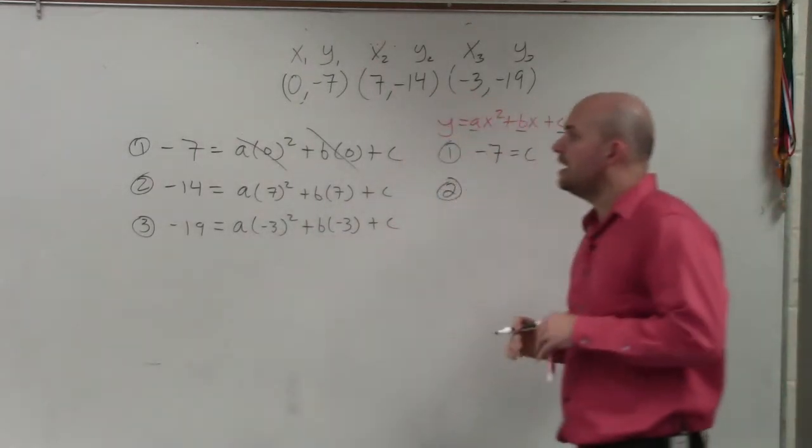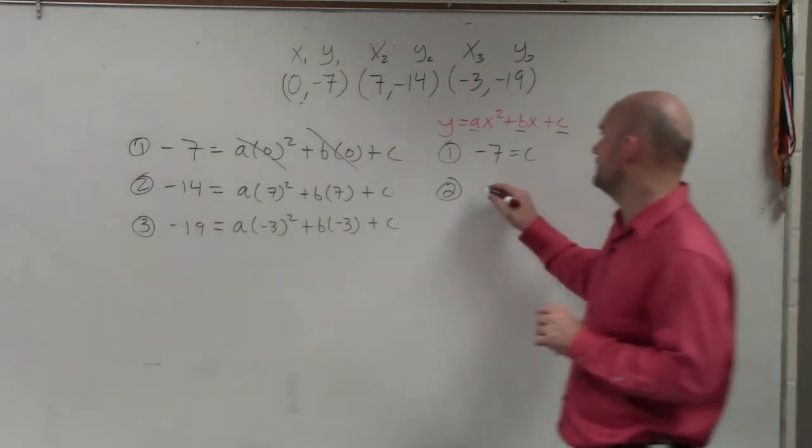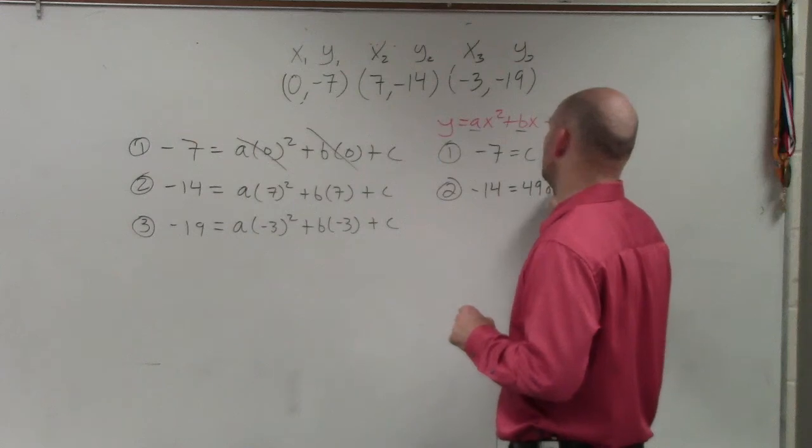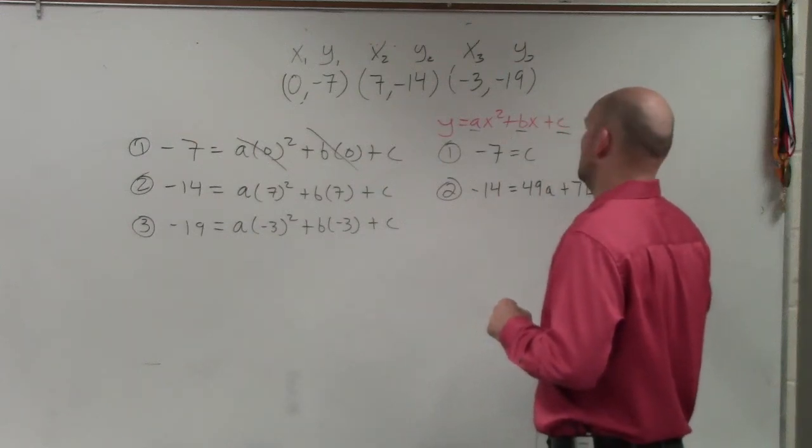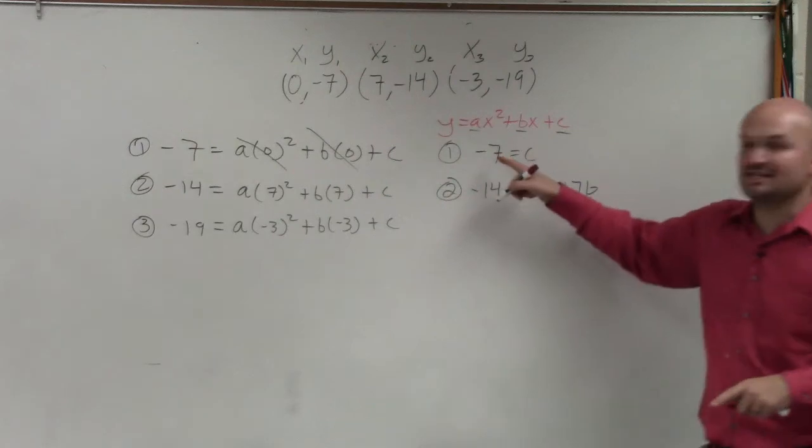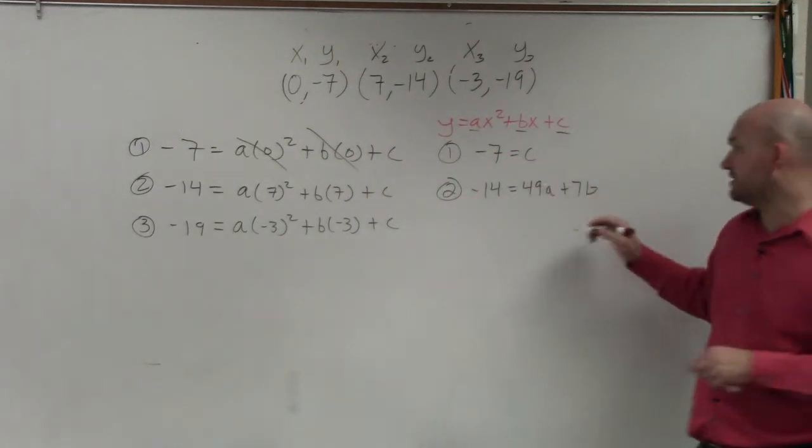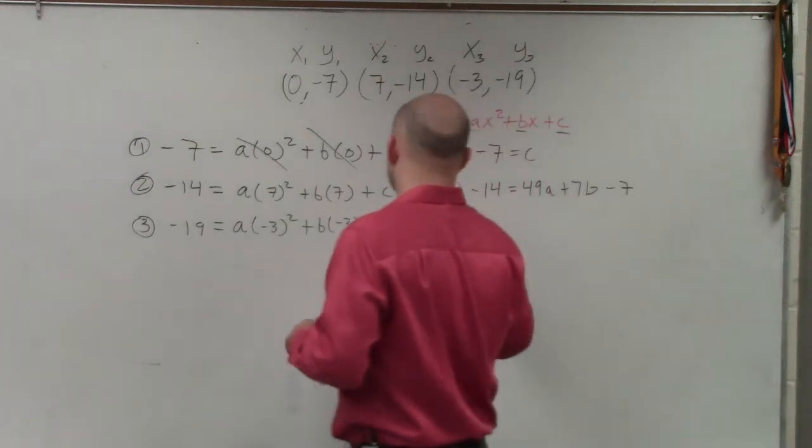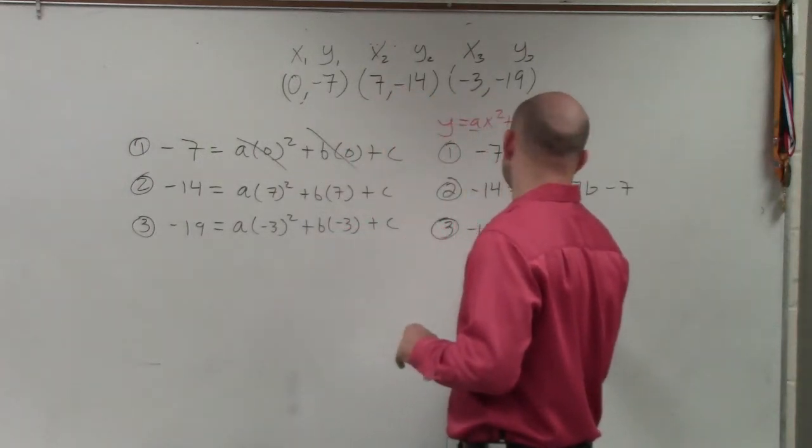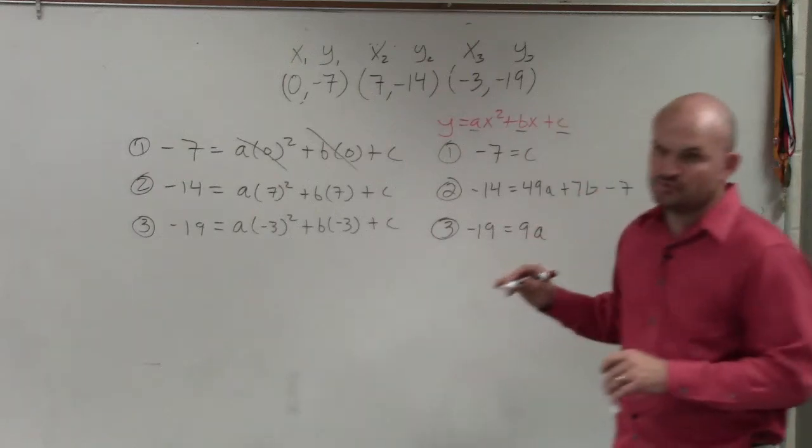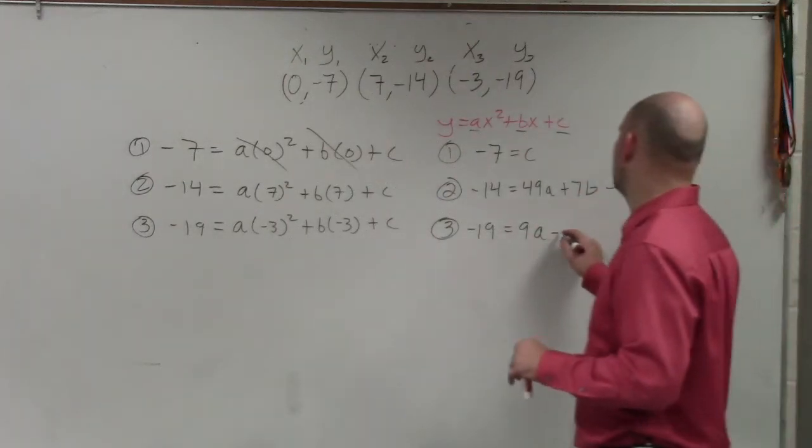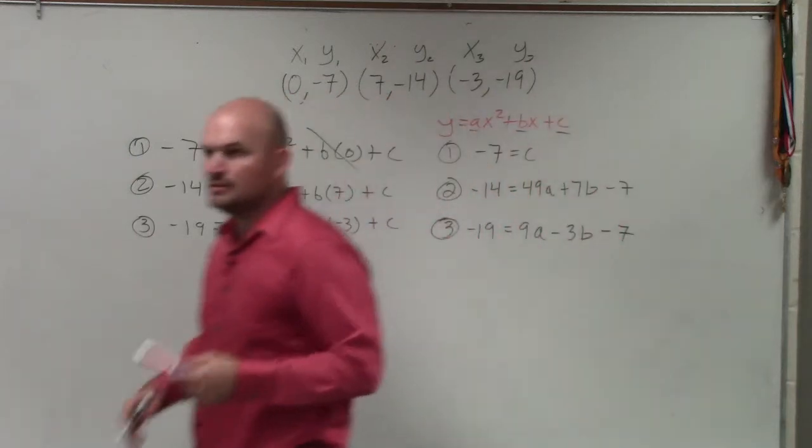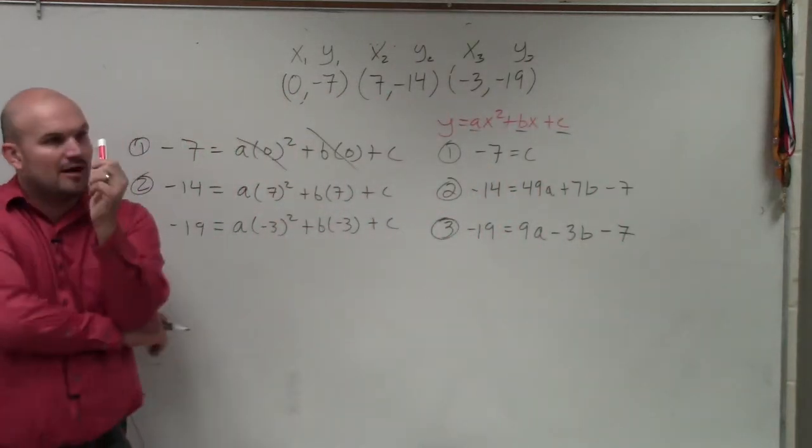Number two, let's see. When I simplify this, I have negative 14 equals 49a plus 7b. And then c, we now know that c is negative 7, correct? So can I just write negative 7 here? Yes. And then number three, I have negative 19 equals 9a, because negative 3 squared is 9, minus 3b minus 7. Does everybody follow me?